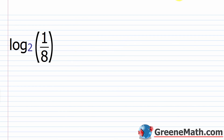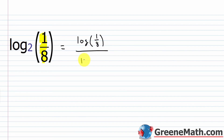But what about log base 2 of one-eighth? In this scenario one-eighth is positive, so we can get an answer. We know 2 to the power of negative 3 gives one-eighth. For the sake of this exercise, log of one-eighth over log of 2 — punch that into your calculator and you'll get negative 3 as the result.